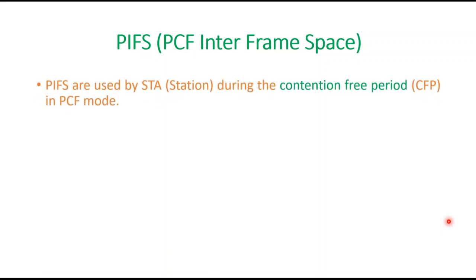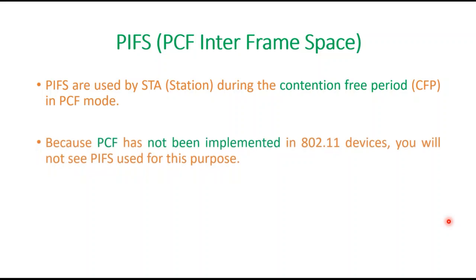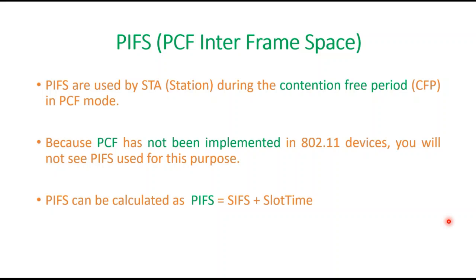PIFS — PCF Interframe Space. PIFS is used by stations during the contention-free period (CF) in PCF mode. Because PCF has not been implemented in 802.11 devices, you will not see PIFS used for this purpose. PIFS can be calculated as: PIFS = SIFS + slot time.